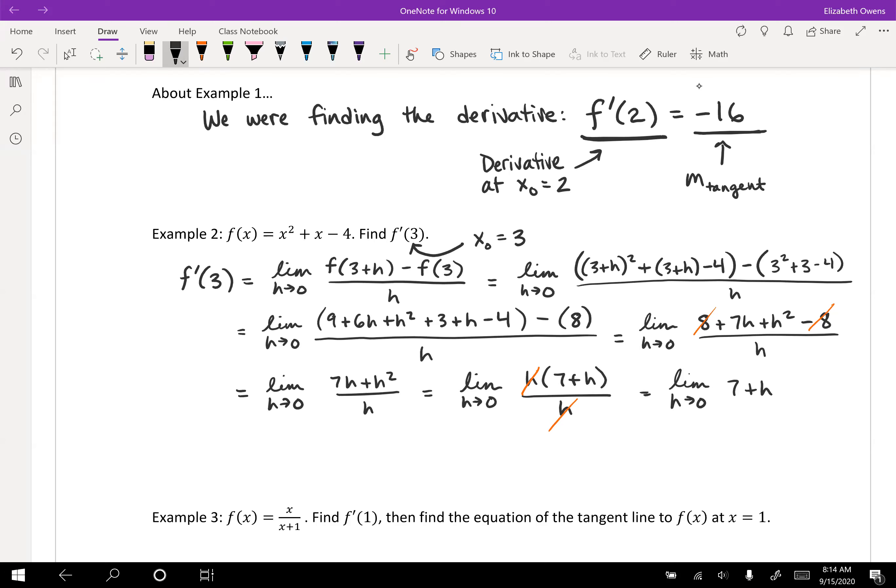Now that's great. So we can see that that is going to equal 7 plus 0 when we do our direct substitution. And so we are going to get 7 here. And that is the derivative of this function. So the derivative of x squared plus x minus 4 at the point x naught equals 3 is going to equal 7. So there's the value of that derivative that's going to be the derivative at that point.